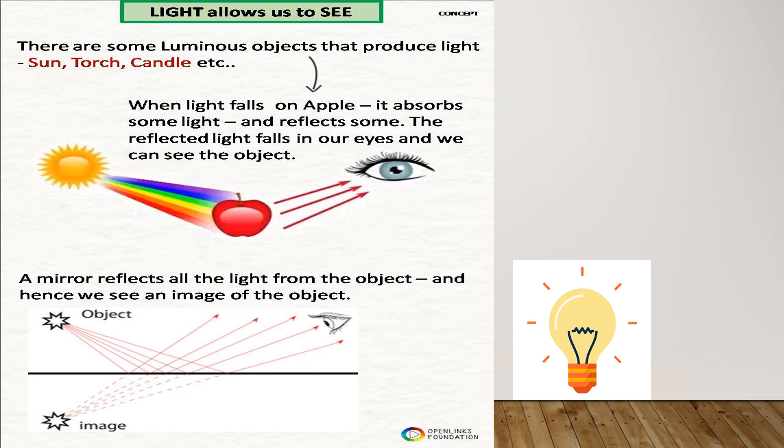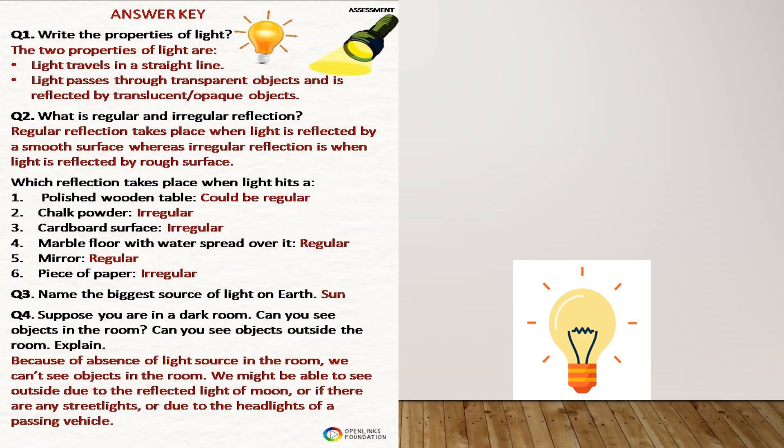A mirror reflects all the light from an object, so we can see the image of the same object. The color of that image is the same as the color of the object, because the mirror is reflecting all the light — it is not absorbing some and reflecting some like other surfaces do.